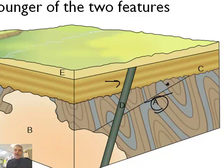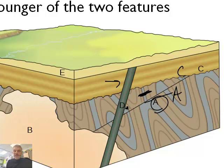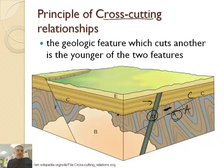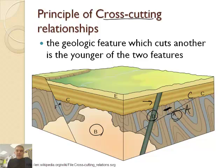A was laid down first, and then we eventually had C. A and C were both laid down, and then there was a fault. But D happened after the fact, so it illustrates cross-cutting relationships. You can also see that B has the same kind of concept — B came after, even though it is in between all these other features.